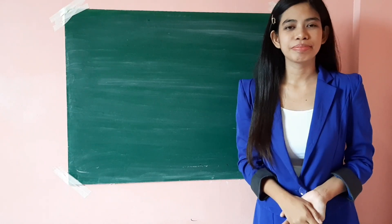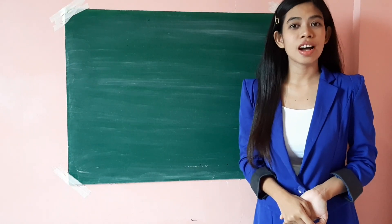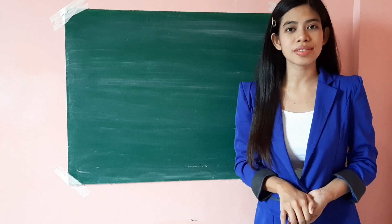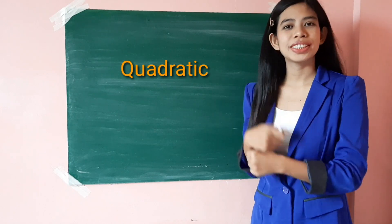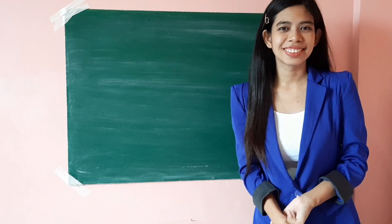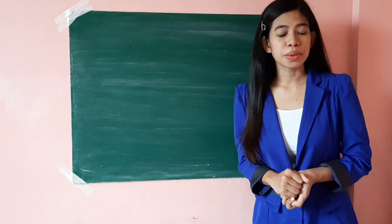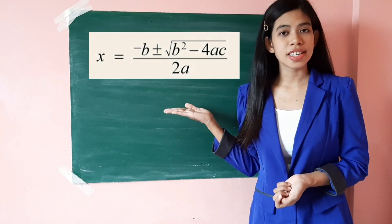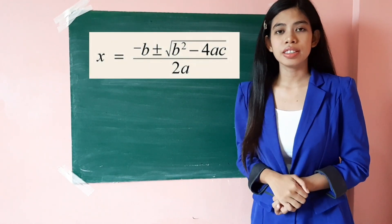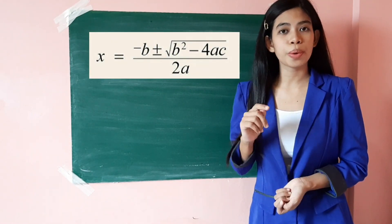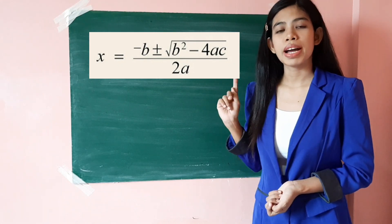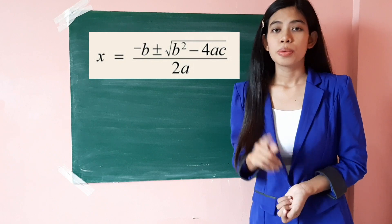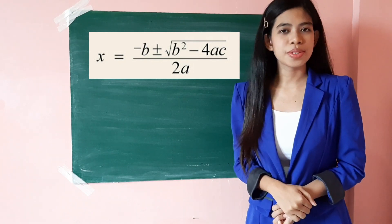Good day, learners! We are now down to the last method of solving quadratic equations, which is about the quadratic formula. The quadratic formula states that x is equal to negative b, plus or minus the square root of b squared minus 4ac, all over 2a, where a is not equal to zero.